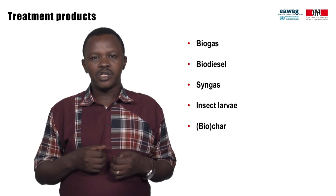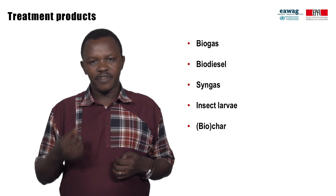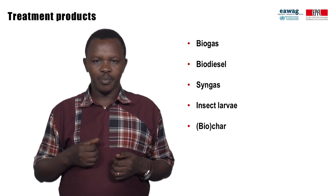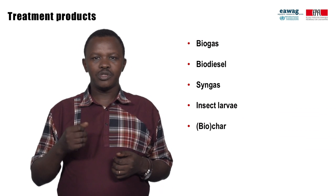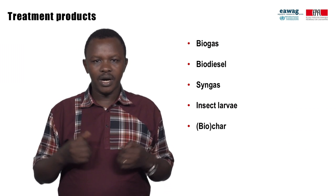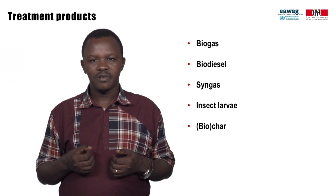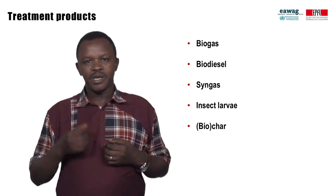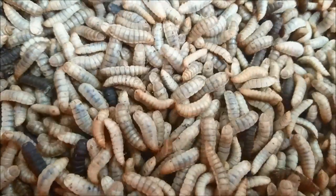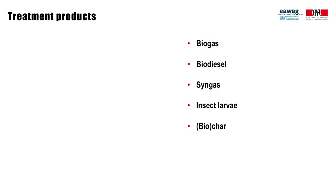In addition, treatment technologies exist that are innovative and in development. These products and treatment technologies include biogas, biodiesel, and syngas — for example, from the anaerobic digestion of fecal sludge — insect larvae from the treatment of fecal sludge with fly larvae, and char from carbonization of fecal sludge.